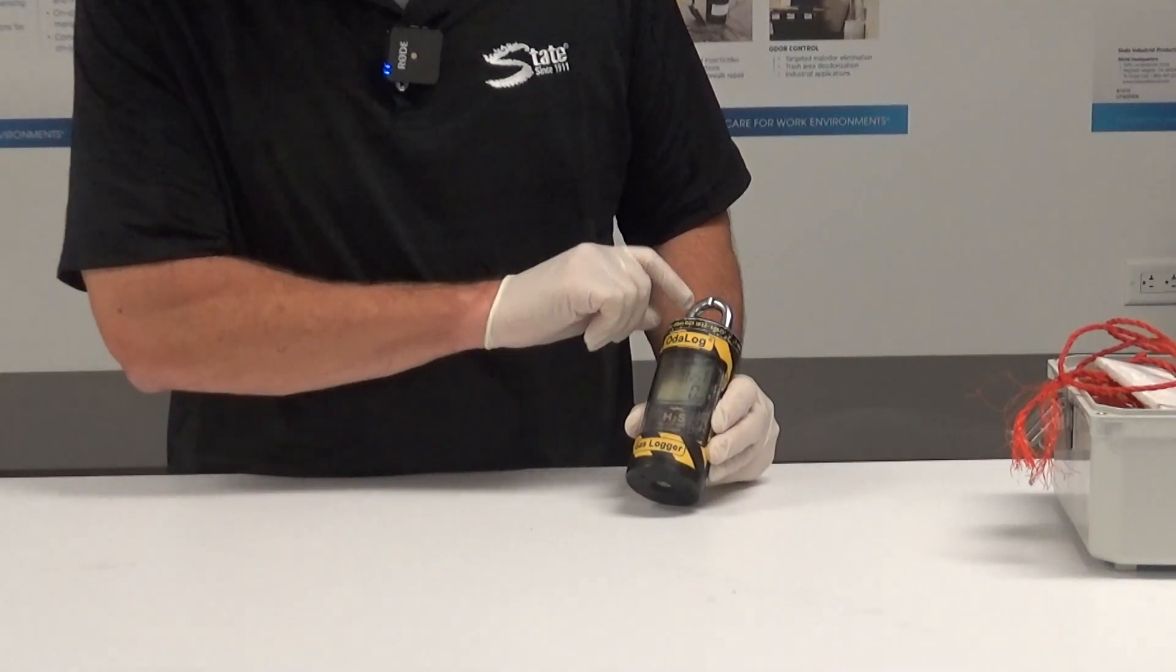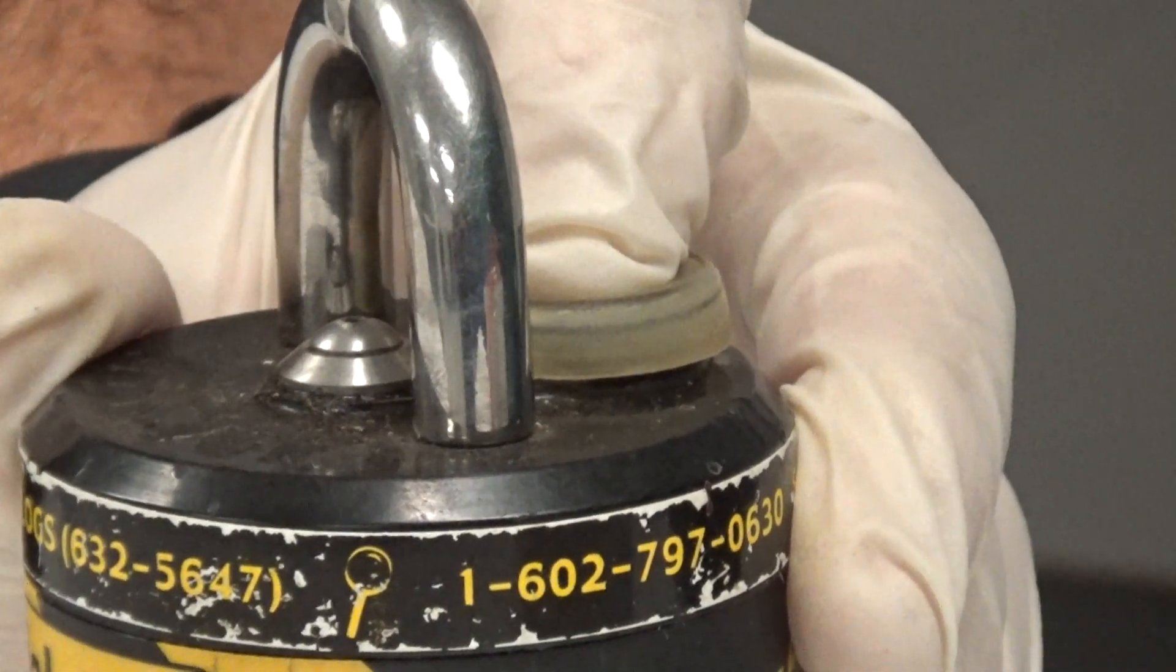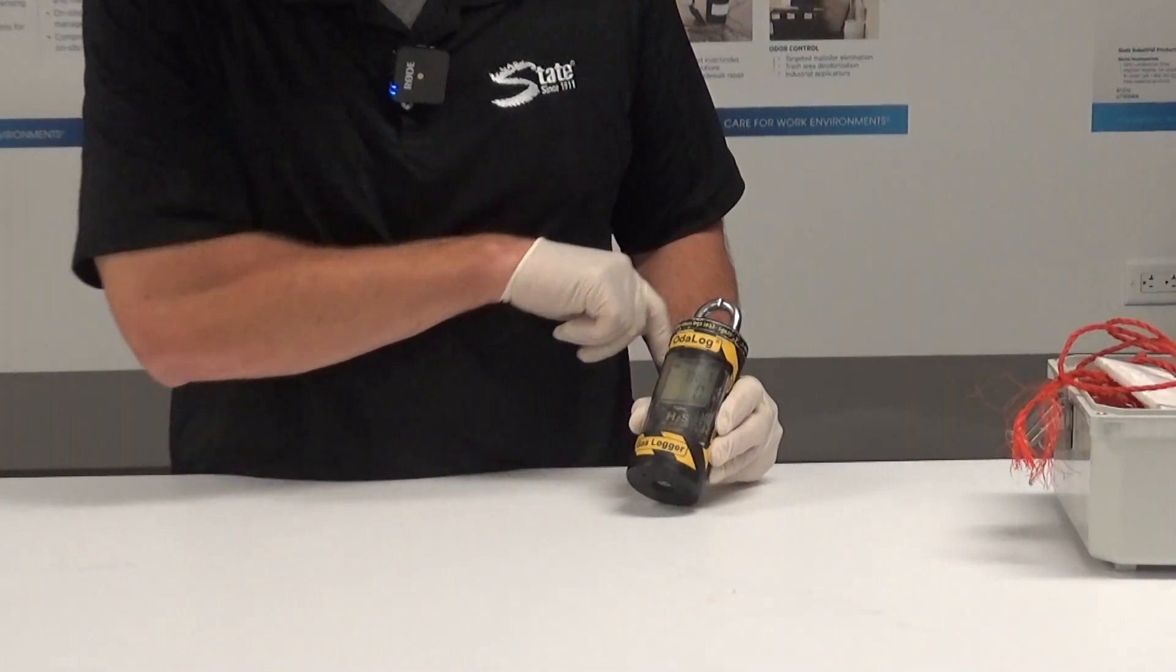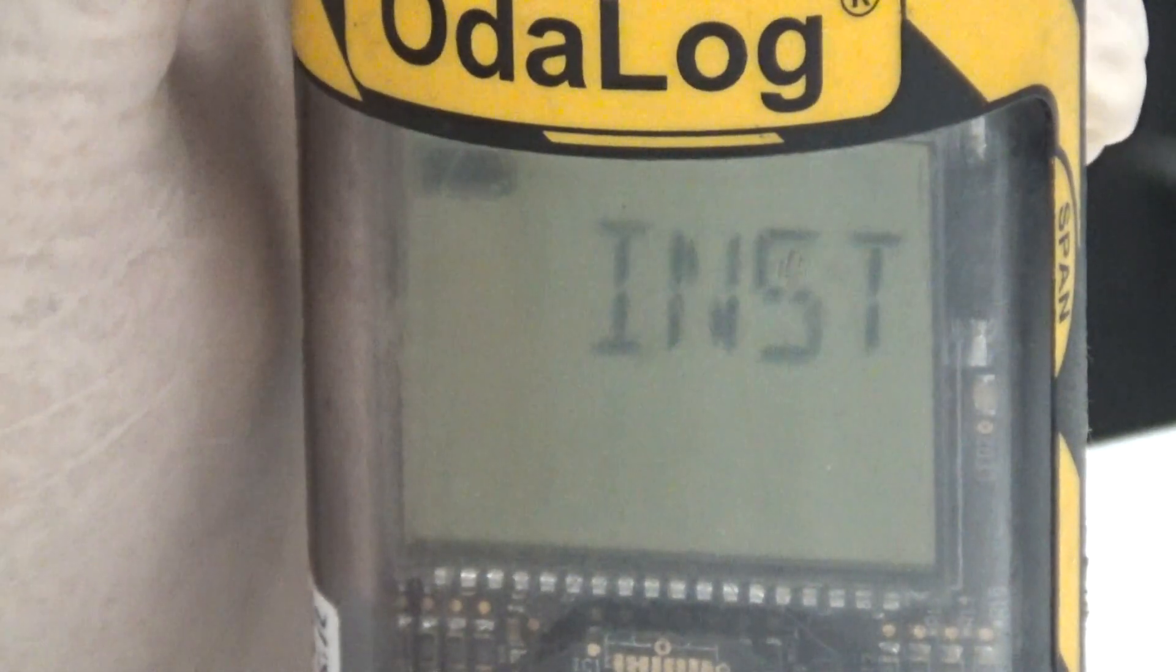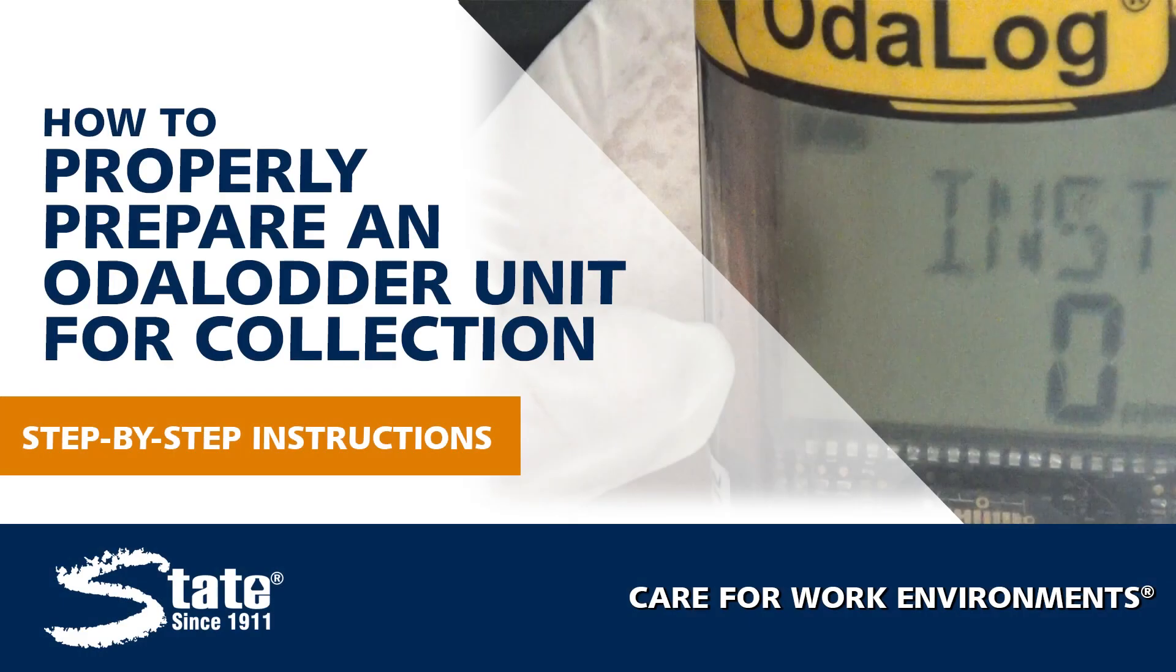So when you're done and you pull the logger back out, you'll hold the button down, it'll say stop log, you'll let go, and you'll be able to send it back to me to have it read. You have successfully prepared the Otolog unit for measurement and collection.